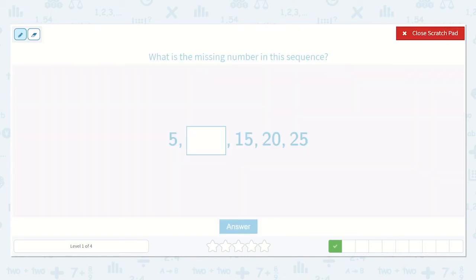So first I'm going to see what we are counting by. How much more is 20 than 15? Let's see, 15, 16, 17, 18, 19, 20. That's 1, 2, 3, 4, 5. So we were adding 5 here.